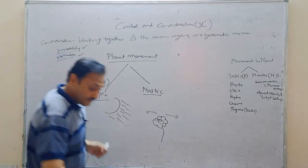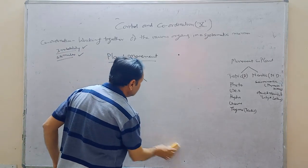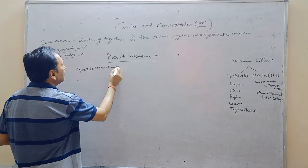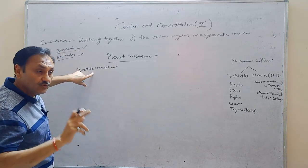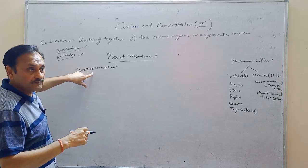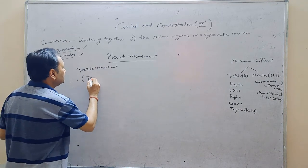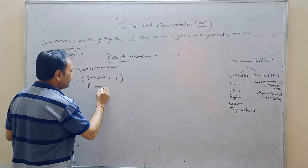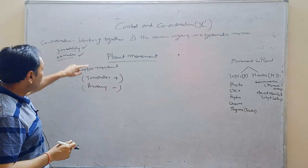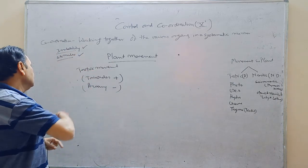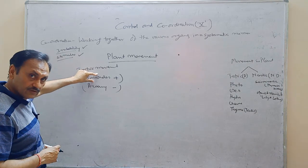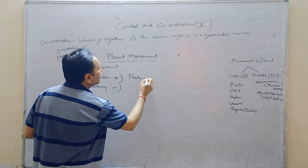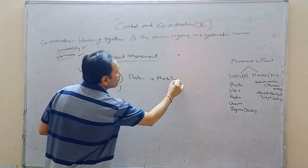On the basis of the types of stimulus, tropic movement can be divided into many more types. The tropic movement is that particular movement of the plant part either towards or away from the stimulus. If it is towards the stimulus, then it is called positive tropic movement, and if it is away, then it is called negative tropic movement. On the basis of the name of the stimulus, suppose that is photo, then it is called positive phototropic movement.